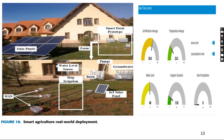In the smart agriculture real-world deployment, the solar panels power the smart farm, drip irrigation and all the wireless sensors. The water level sensors and the pumps are underground and supply water for the plants based on soil moisture average and temperature.